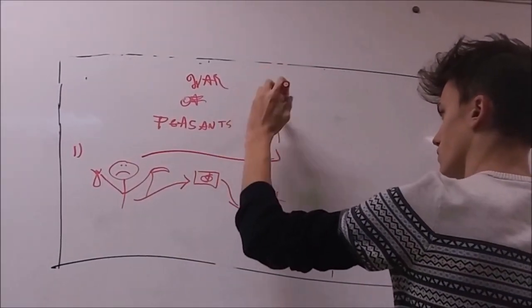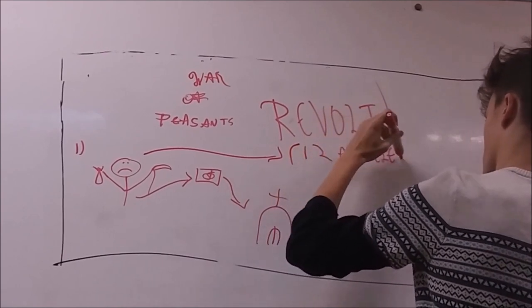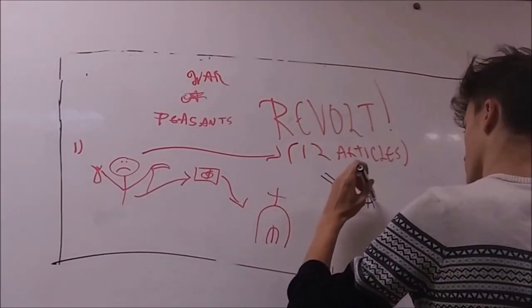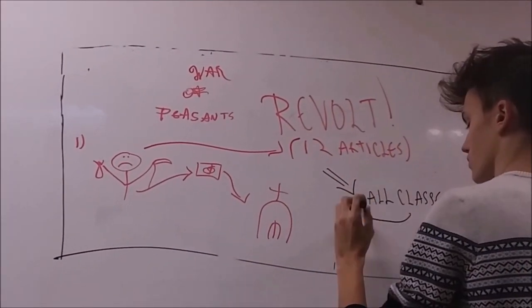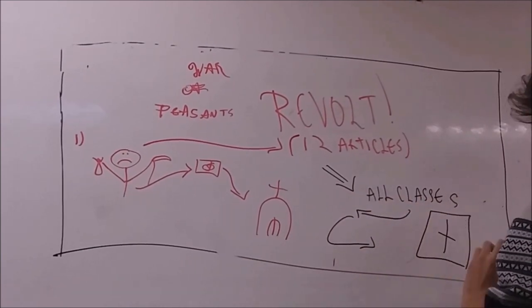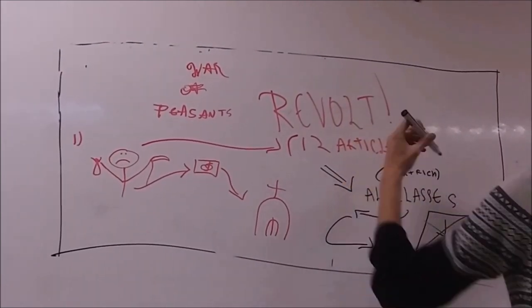Peasants, citizens and aristocrats as well took significant part in the battle. All of them gathered and created the 12 articles, something very similar to Martin Luther's statements. They claimed that the serfdom is a man-made concept and had nothing to do with the beliefs expressed in the Bible.